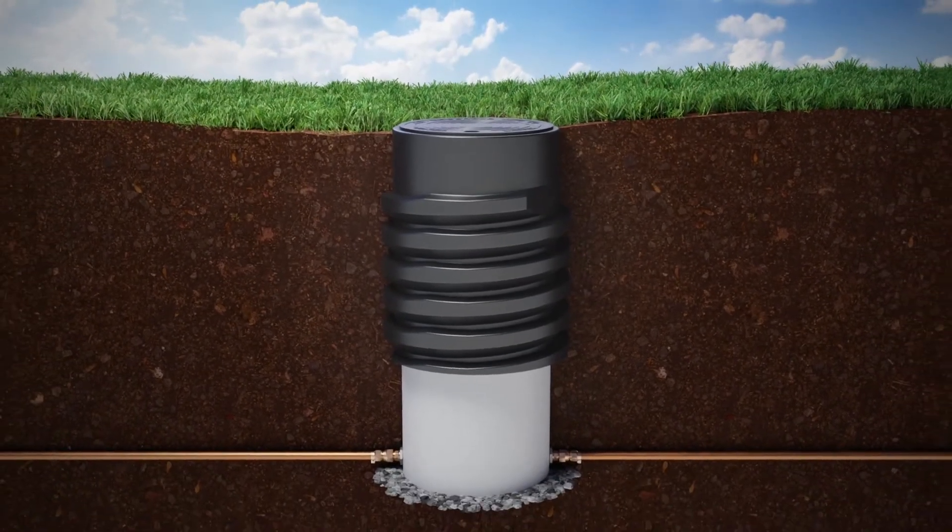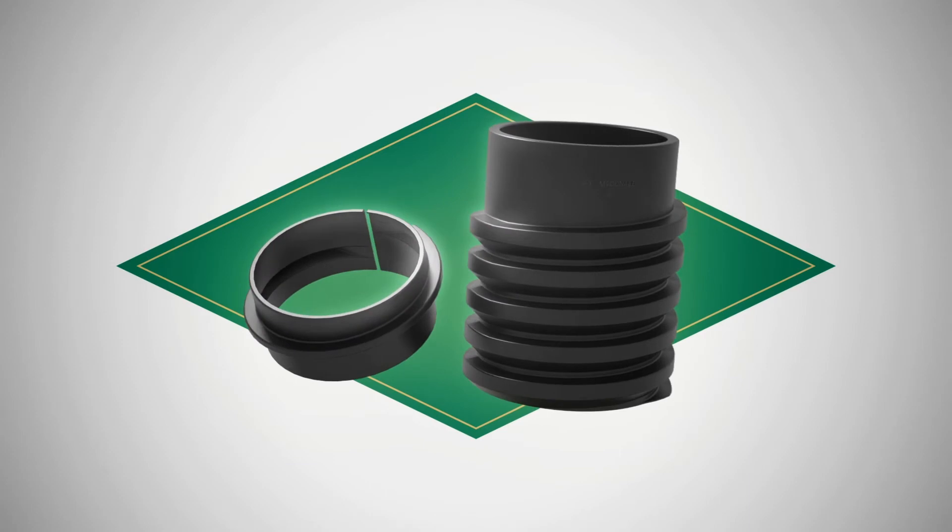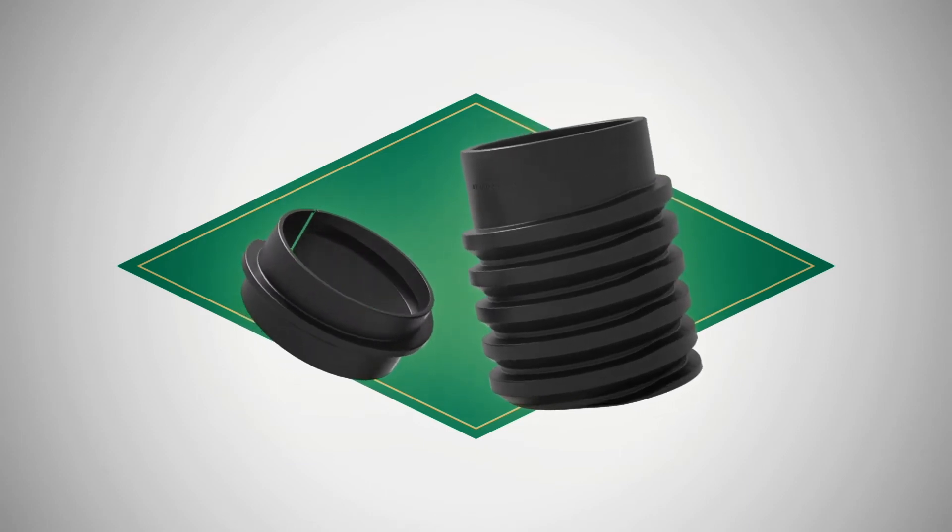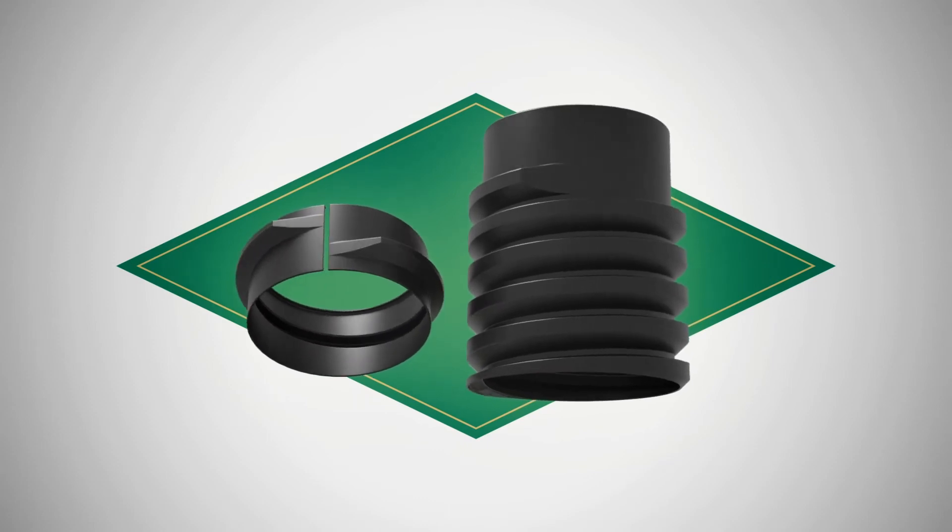Better yet, for those instances where a traditional meter pit has already been installed but not to proper grade level, our 95 series top adjustable retrofit kit can easily be installed under the existing PVC pipe without digging the entire depth of the pit.